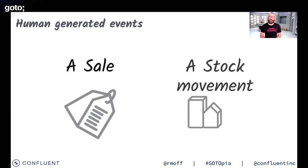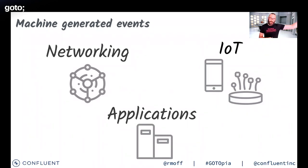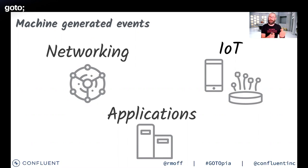You also get machine-generated events. IoT devices continually log readings and send information about temperature or humidity. You get network events — firewalls and routers reporting how many packets they've processed and how many inbound connections have arrived. Our applications are also a source of events: when your application throws an error, that is an event. It happened at a point in time — what happened? There was an error, and here is my stack trace.